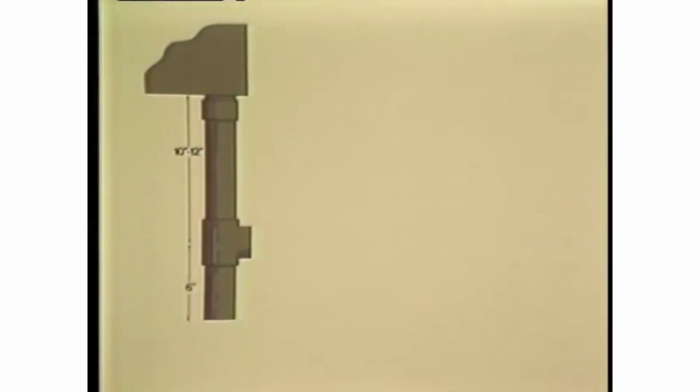Regardless of the type of trap selected, install a drip leg, a tee, and a 6-inch dirt leg from the condensate outlet of the process or heat exchange equipment. The drip and dirt legs should be the same size as the equipment's condensate outlet. From the side of the tee, install a strainer to protect the trap from dirt.